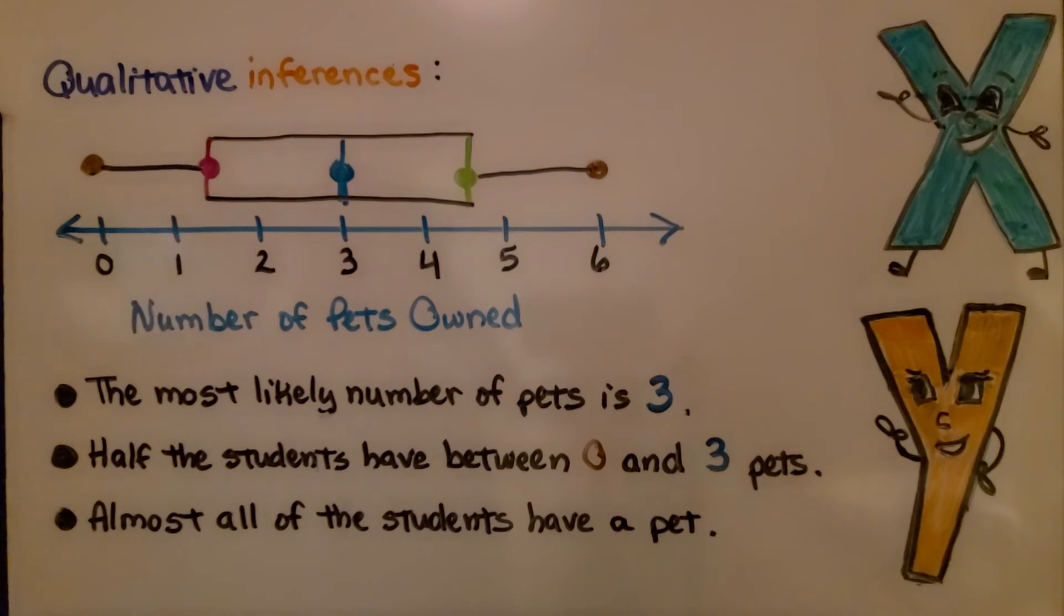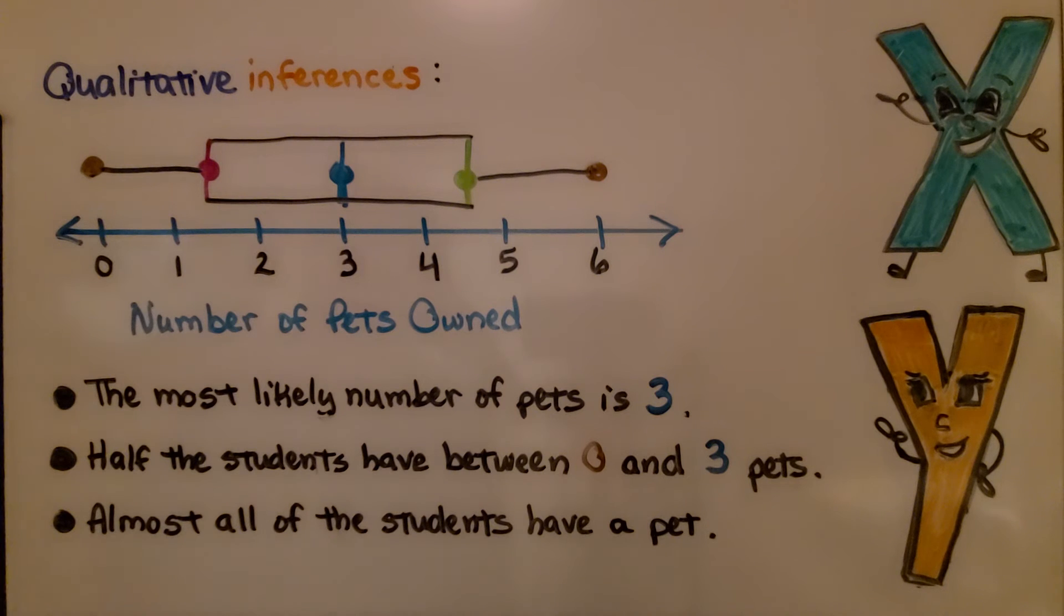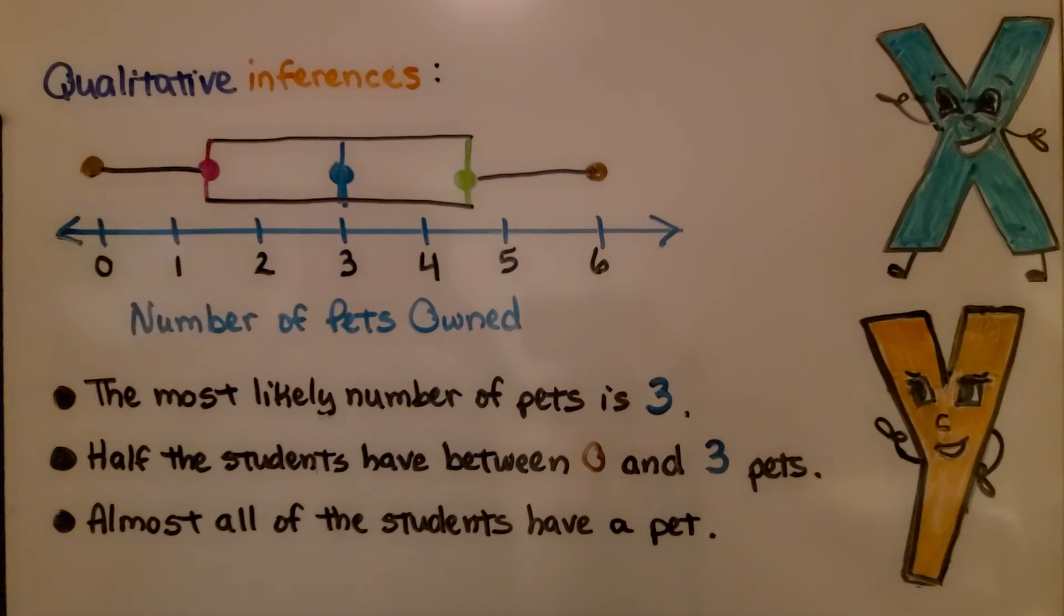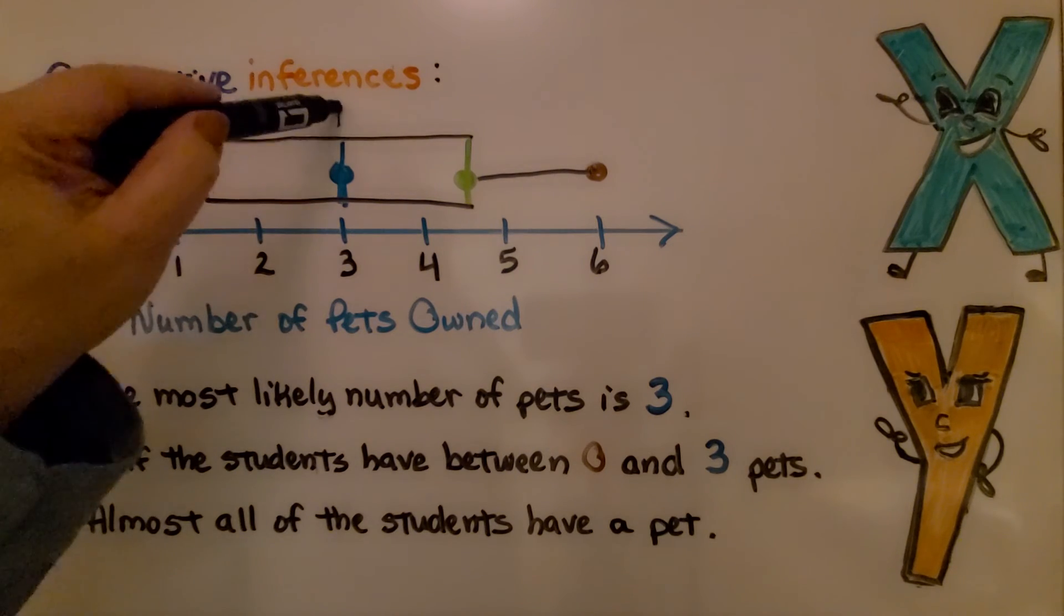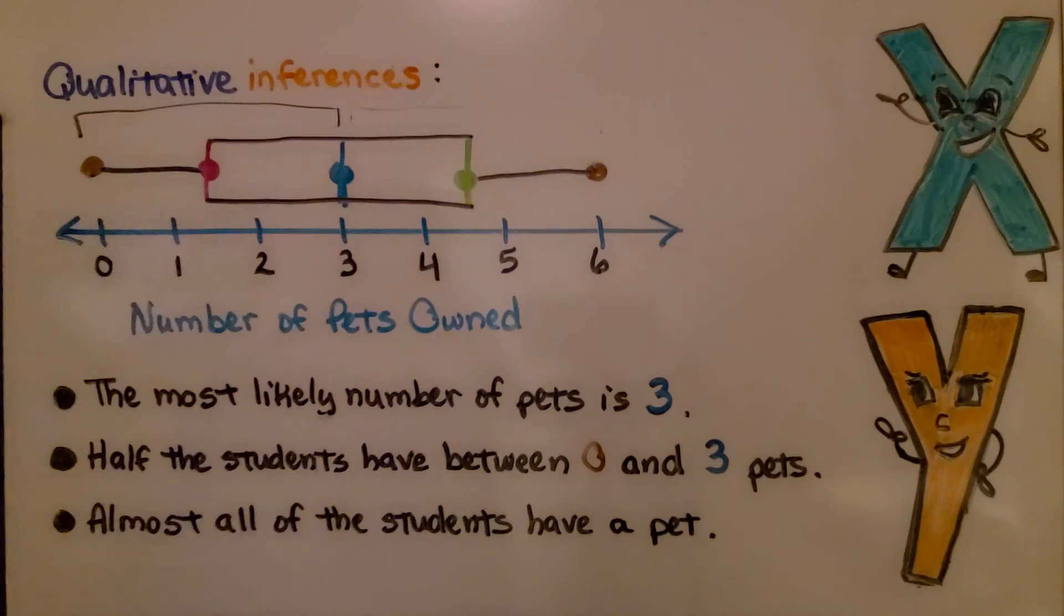Now for the qualitative inferences. We have our box and whisker plot of the number of pets owned from the survey. The most likely number of pets is 3. That's the middle number, the median. Half the students have between 0 and 3 pets. We can see that this is half. We can also see that this is half. Almost all of the students have a pet. We can say the students have at least one pet, most of the students. Not all, because someone does have 0, but most of the students have at least one pet.